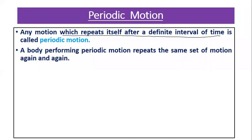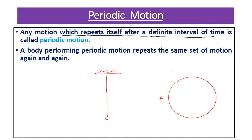A body performing periodic motion repeats the same set of motion again and again. For example, when a body moves in circular motion starting at point A, it returns to point A after a particular interval — so it is periodic. Another example is the motion of the bob of a simple pendulum: when it oscillates, it repeats itself after equal intervals of time, making it a periodic motion.